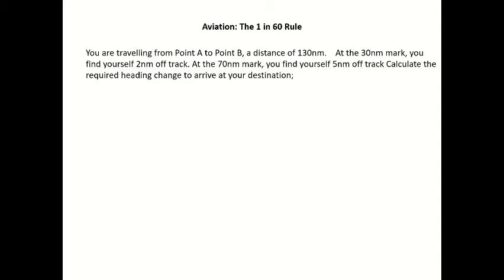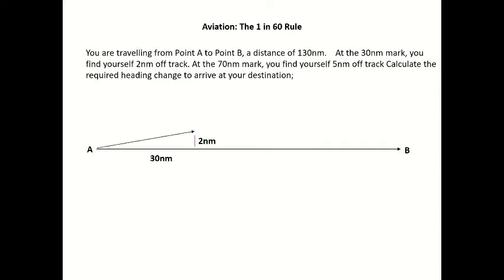Next question, similar to the last one. You're travelling from point A to point B, a distance of 130 nautical miles. At the 30 nautical mile mark you find yourself 2 nautical miles off track. At the 70 nautical mile mark you find yourself 5 nautical miles off track. Calculate the required heading change to arrive at your destination. Draw the question out: point A to point B; first measuring point is 30 nautical miles along track, 2 nautical miles off track; second measuring mark is an additional 40 nautical miles along track — 70 nautical miles total — and we find ourselves 5 nautical miles off track; final leg is 60 nautical miles remaining back to point B.